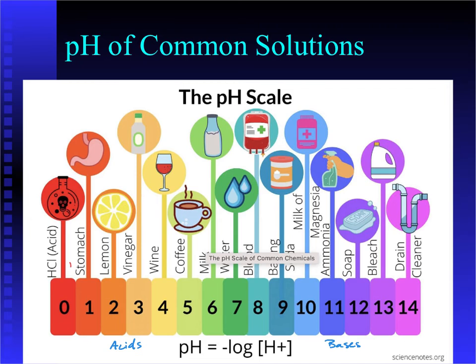Remember, water is neutral, so 7 is neutral. And then things that we might see that are slightly acidic would be like milk or coffee. So we call those weak acids.